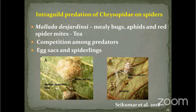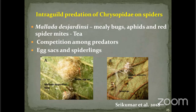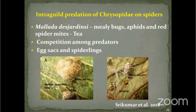This is intraguild predation of chrysopid spiders — the species of Mallada, which is known as a predator of mealybugs, aphids, and red spider mites in tea ecosystems. Due to competition, they predate upon the eggs and spider links of spiders in the tea ecosystem.